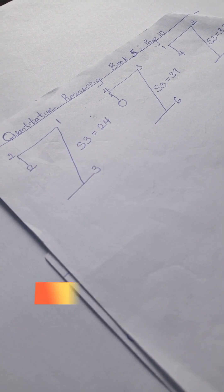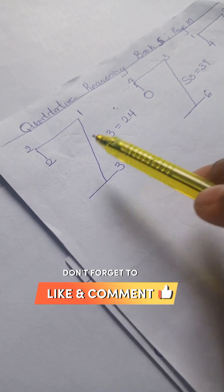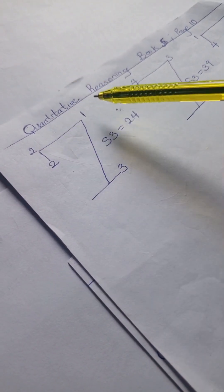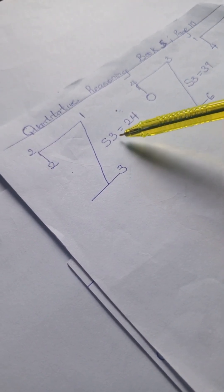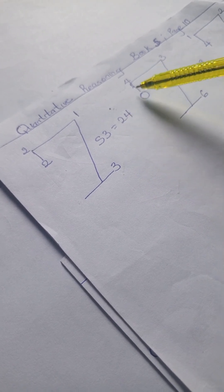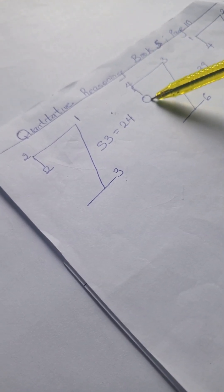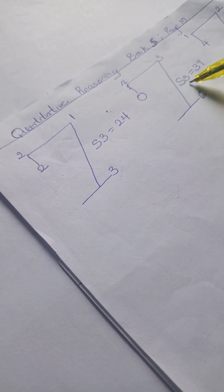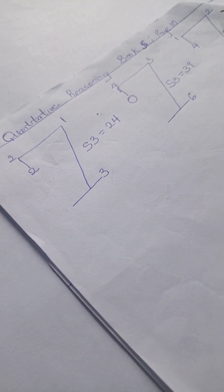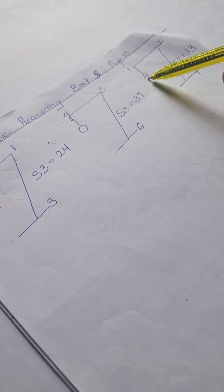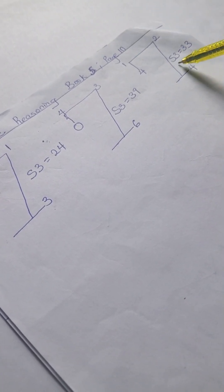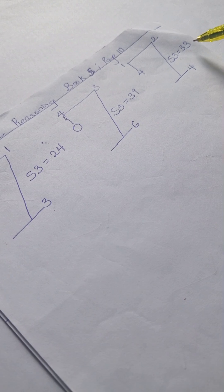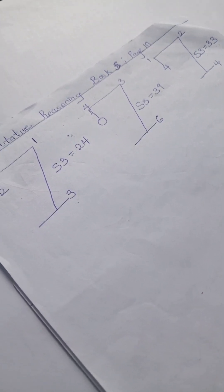Alright, so we have this problem. We have two two one three S3 equals 24. Here we have zero four three six S3 equals 39. And here we have four one two four S3 equals 33. Alright, so we're going to solve this.